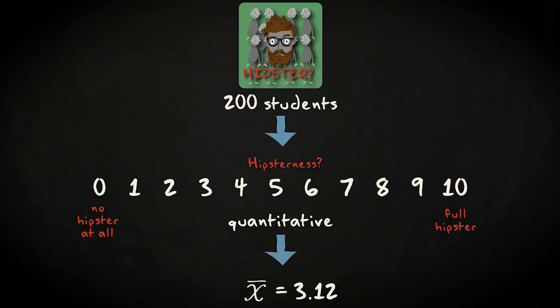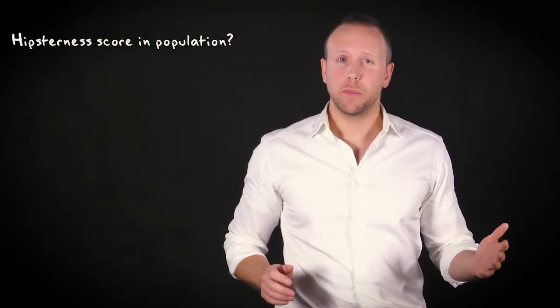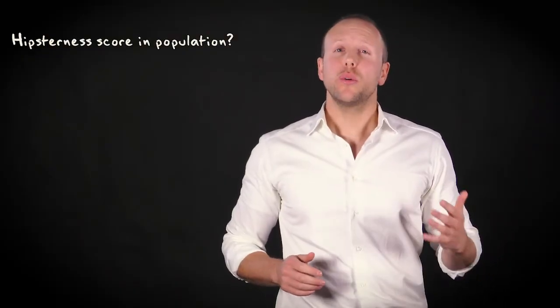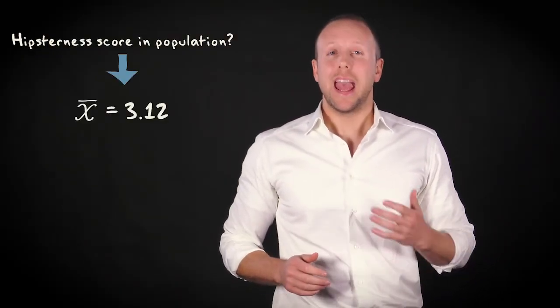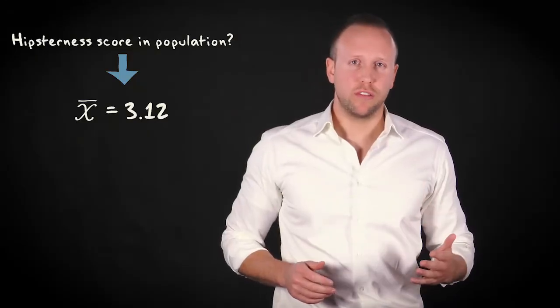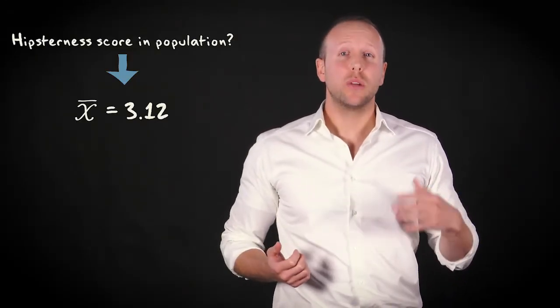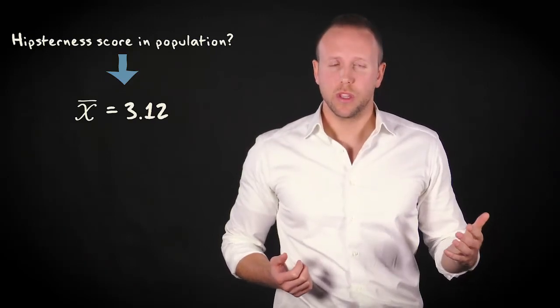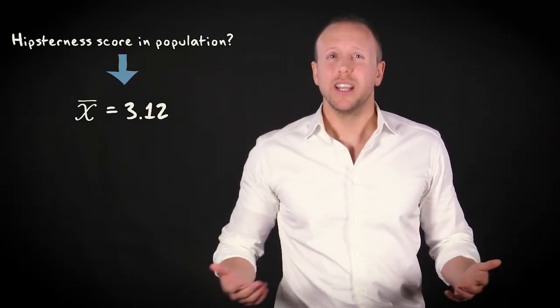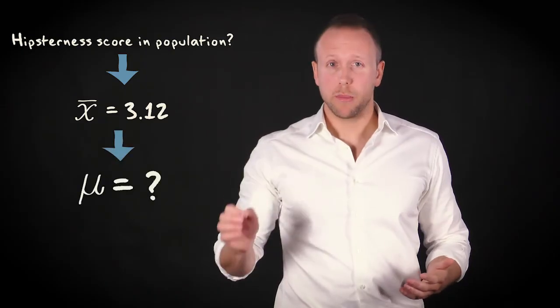Now imagine that the mean hipsterness score in the sample is 3.12. The central question now is what the mean hipsterness score in the wider population is. You know the relevant statistic in your sample, x bar equals 3.12, but what you actually want to know is what the mean hipsterness score in the wider population is. You want to know, in other words, the value of population parameter mu.